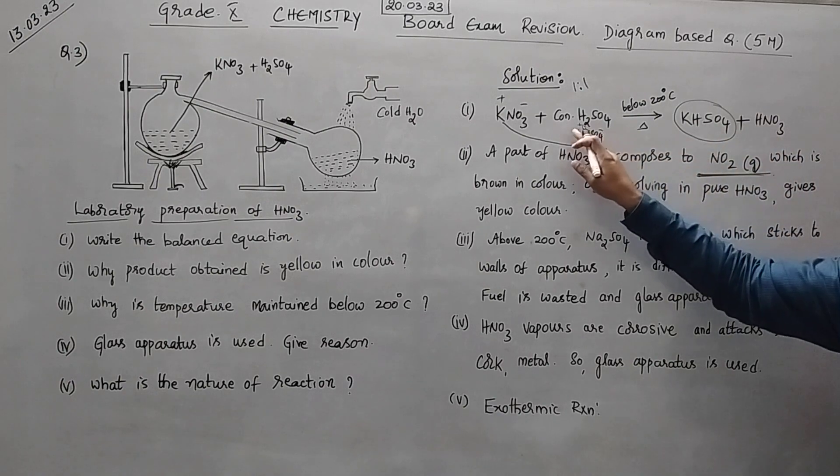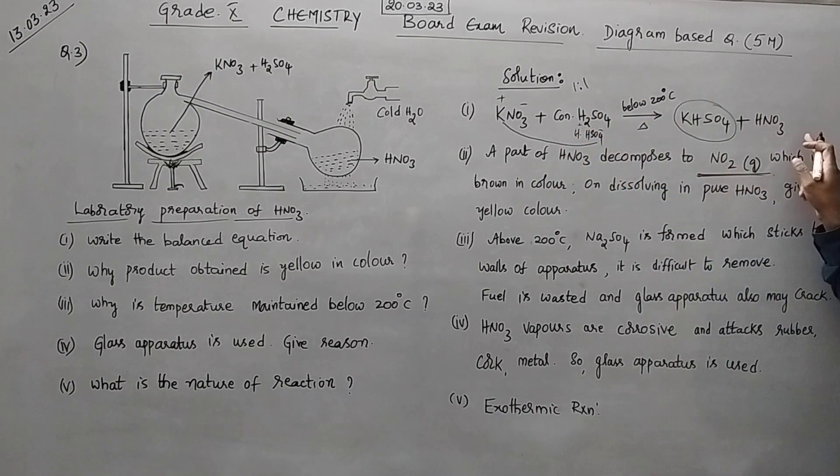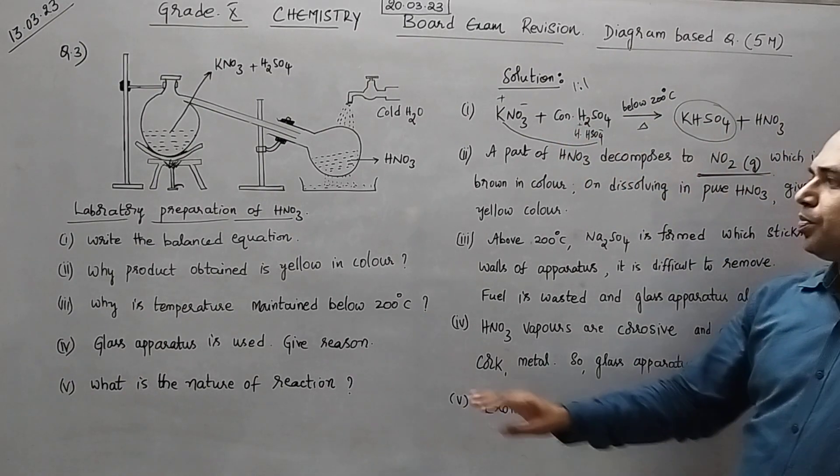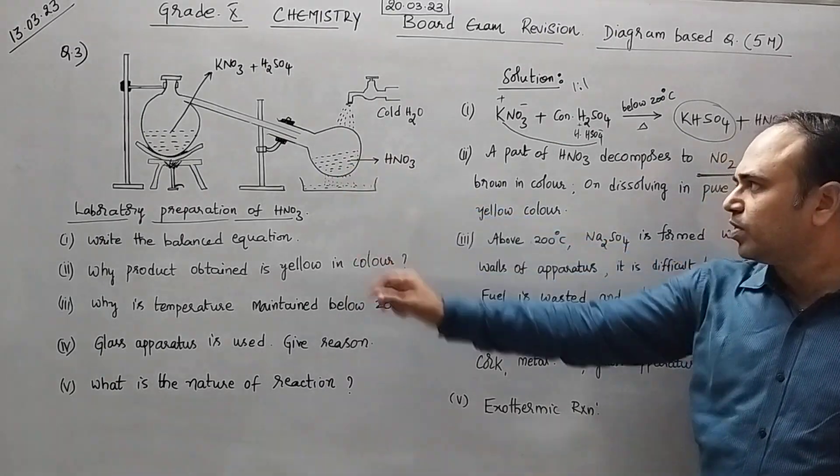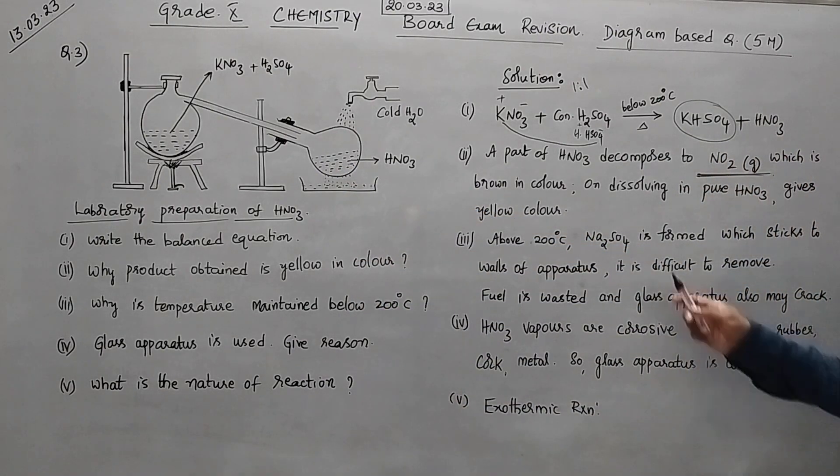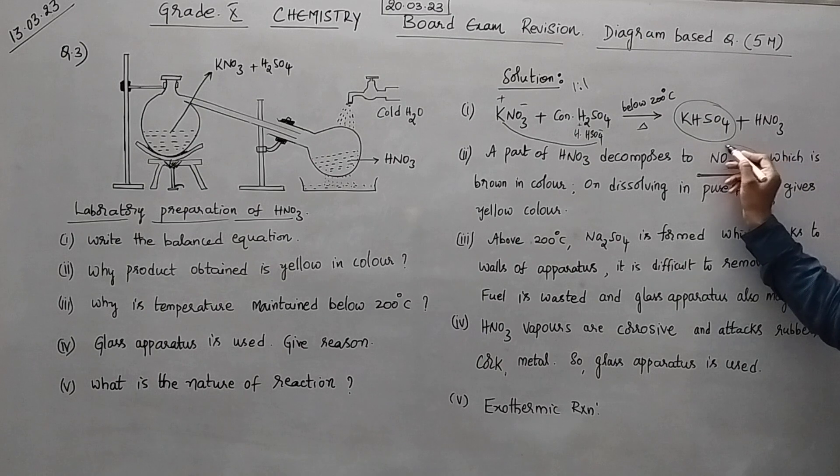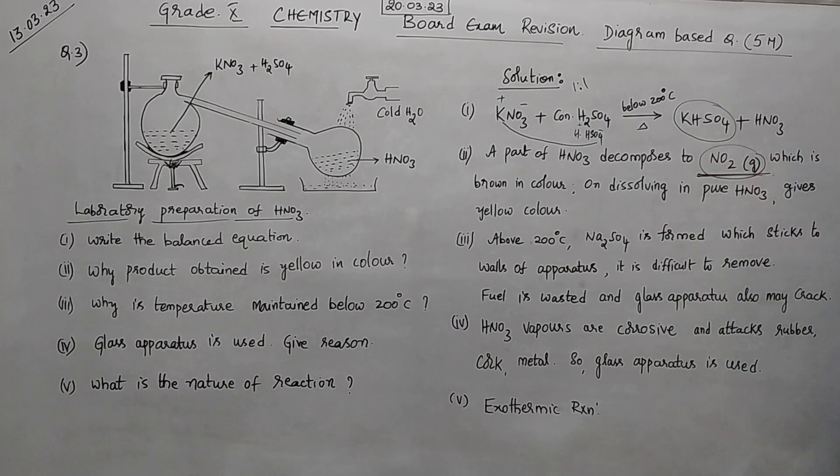Hope you have understood this. The balance of the chemical equation is written. Second one. Why do you get yellow colour here? What is the reason?